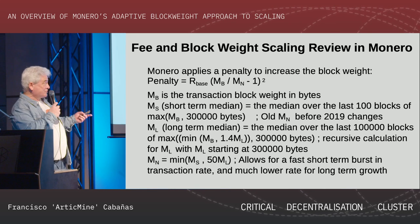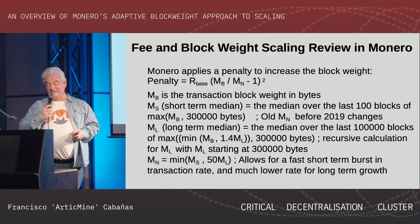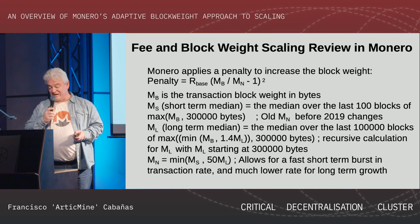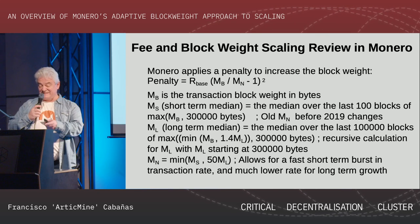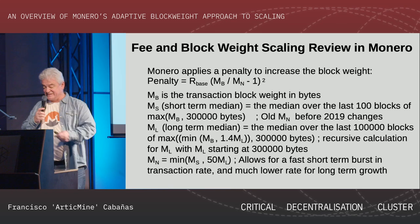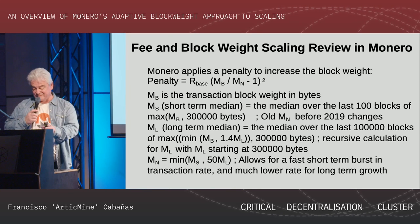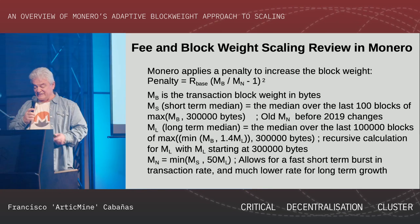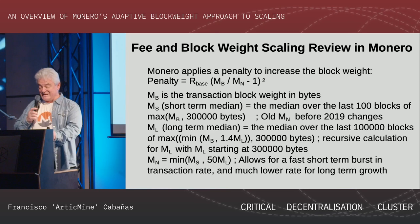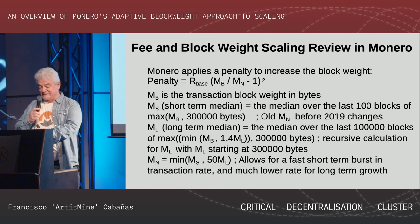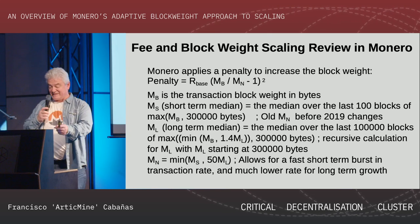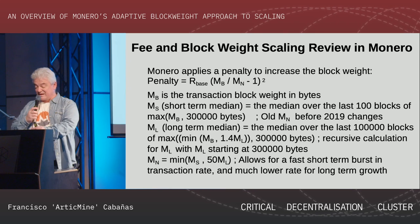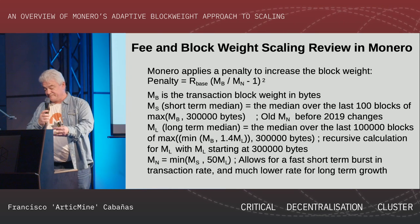The key numbers: mb is the transaction block weight; ms is the short-term median; ml is the long-term median, which is a recursive calculation; and mn is the minimum of the short-term median ms and the long-term median ml.